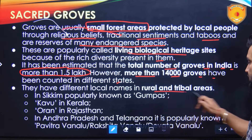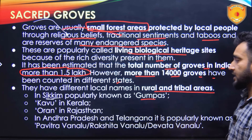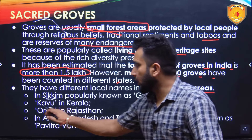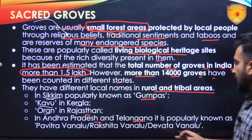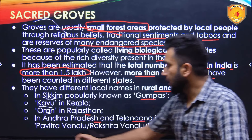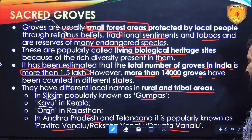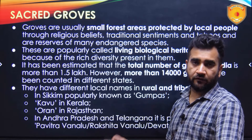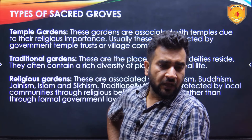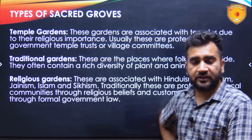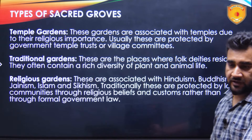It has been estimated that the total number of groves in India is more than 1.5 lakh, though more than 14,000 groves have been counted in different states. They have different local names in rural and tribal areas. In Sikkim they are known as Gumpas, Kavu in Kerala, Oran in Rajasthan, and in Andhra Pradesh and Telangana they are known as Pavitra Vanalu, Rakshita Vanalu, or Devata Vanalu.